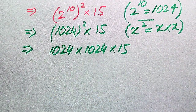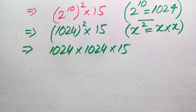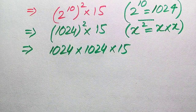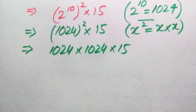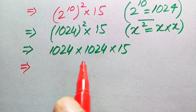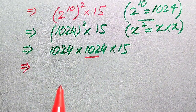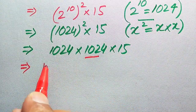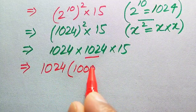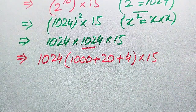Now we need to multiply all three of these bigger values without using a calculator. Here is a smart technique: we break 1024 into the form of thousands, tens, and ones. So we write 1024 as 1000 plus 20 plus 4, multiplied by 15.